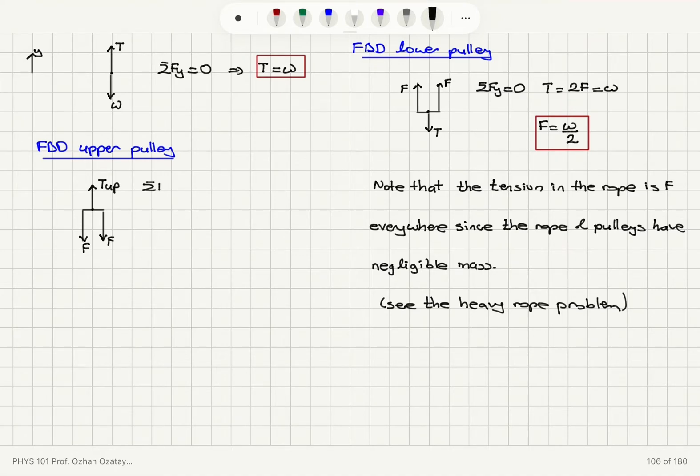The net force on the y-axis should be equal to zero. Therefore, T_up must be balancing 2F which is equal to W. So the tension in the upper chain will be equal to W also.